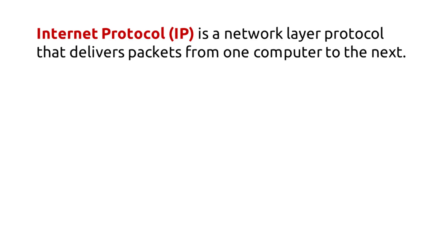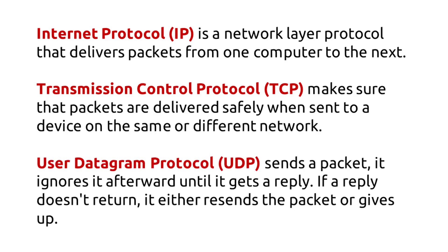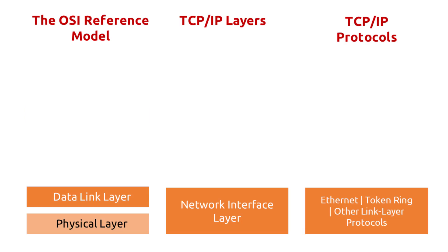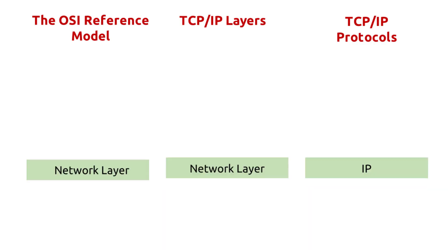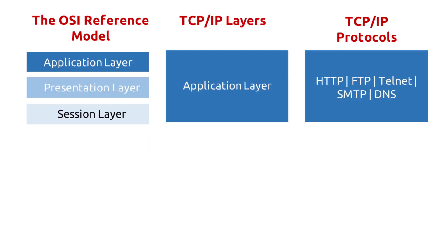Lesson Summary: IP is a network layer protocol that delivers packets from one computer to the next. TCP makes sure that packets are delivered safely when sent to a device on the same or different network. UDP sends a packet and ignores it until it gets a reply; if a reply doesn't return, it either resends the packet or gives up. The TCP/IP layers match the OSI model: the interface layer focuses on physically sending data between two devices on the same network; the network layer sends packets to their destination regardless of route; the transport layer ensures secure delivery; and the application layer allows end users to interact and communicate with applications.